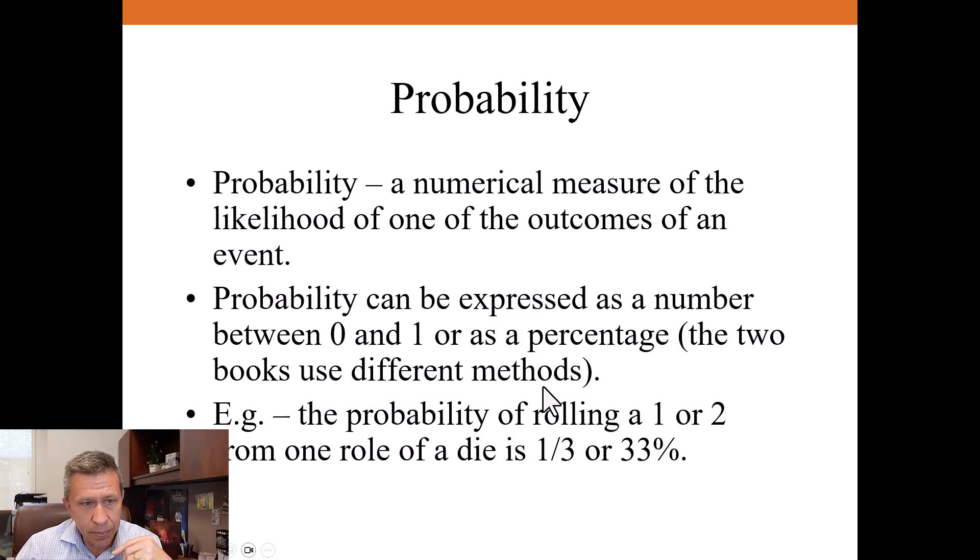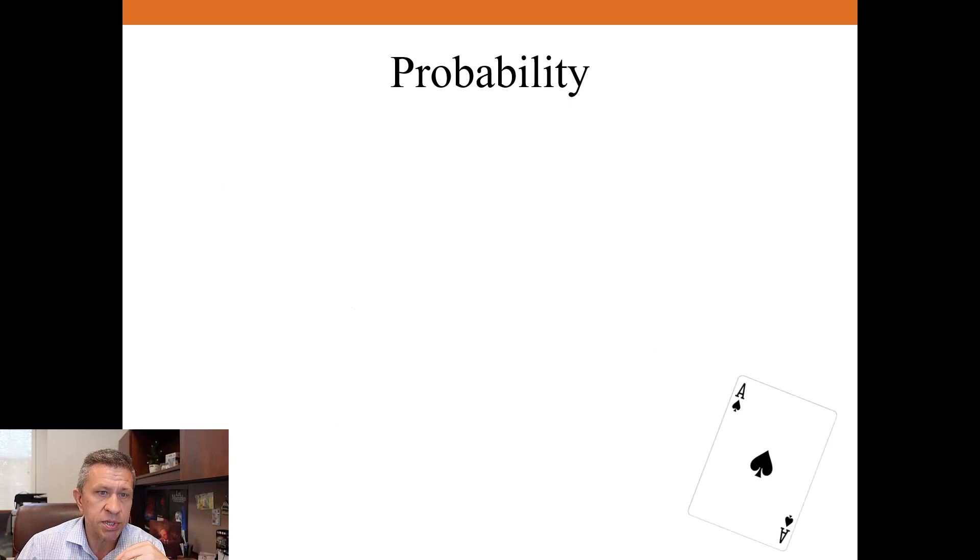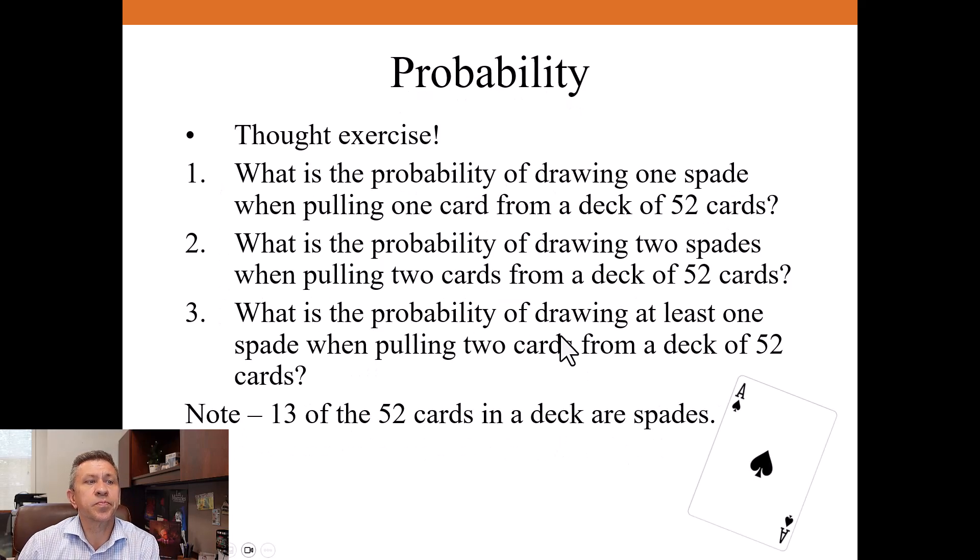I put in an example. If you are rolling a die, it could be 1, 2, 3, 4, 5, or 6. The probability that you're going to get a roll of a 1 or a 2 is 1 out of 3, one third. So it could be 0.33 or 33%.